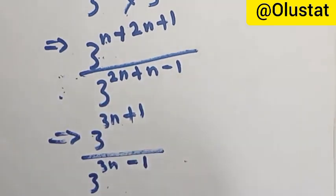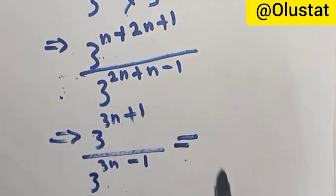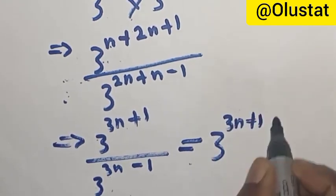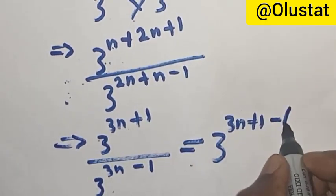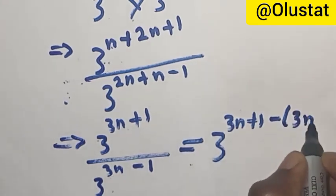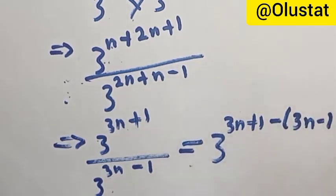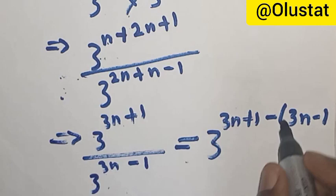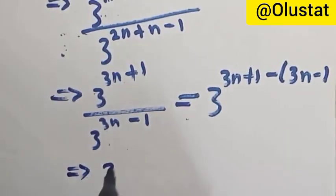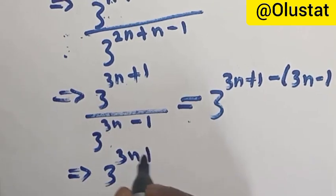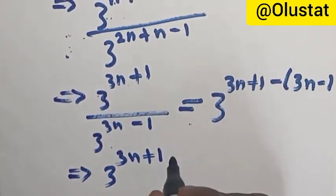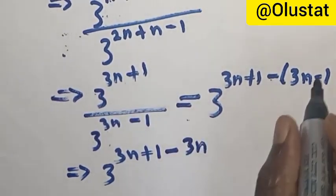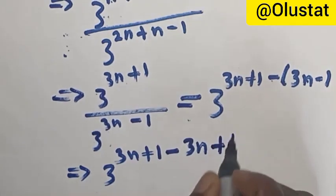Now let's perform another operation here. This is equal to 3 raised to power 3n plus 1 minus 3n minus 1, applying the division law of indices. Opening this bracket: we have 3 raised to power 3n plus 1, then minus multiplied by 3n gives minus 3n, and minus times minus becomes plus 1.